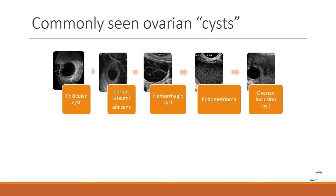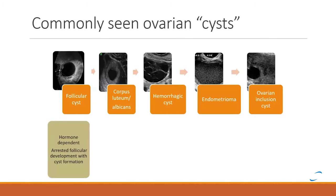You'll see I have 'cysts' in quotation marks — that's because I don't necessarily want to apply the label of a cyst, which may imply pathology, to a normal appearance of an ovary depending on its physiologic state. Cysts can be normal or abnormal depending on whether they fit with the ovarian physiology. The types include a follicular cyst, corpus luteum or corpus albicans, hemorrhagic cyst, endometrioma, and ovarian inclusion cyst — some of the different ultrasound appearances you may see in pre-menopausal patients.